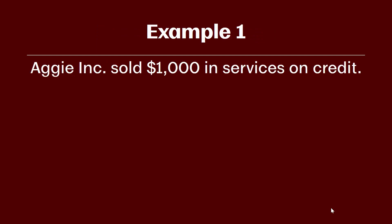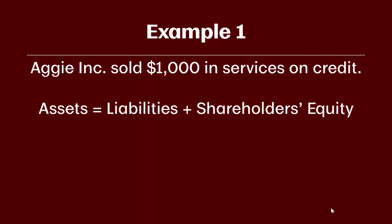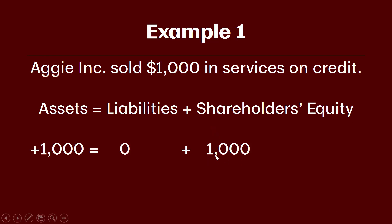Let's assume that Aggie Inc sold $1,000 in services on credit. We've provided a good or service in this example, so we know we're going to need to record revenue, even though since the services are sold on credit we're not yet going to receive cash. Because the revenue was earned, we need to record it and increase shareholders' equity by $1,000.